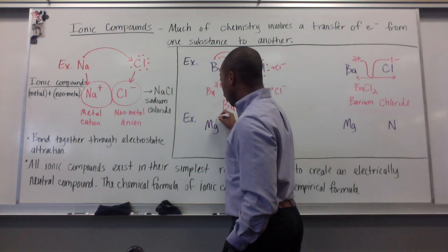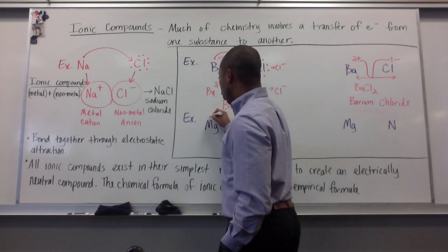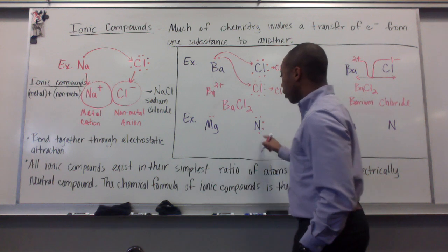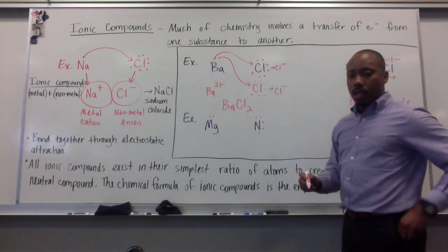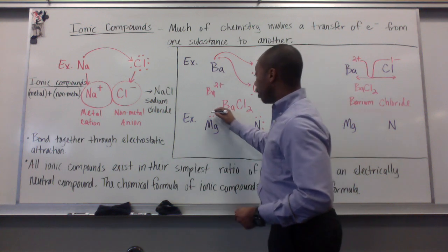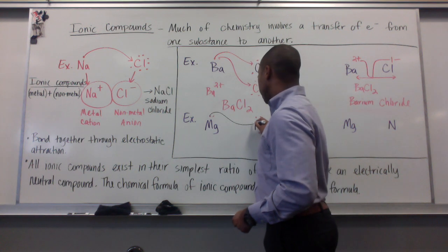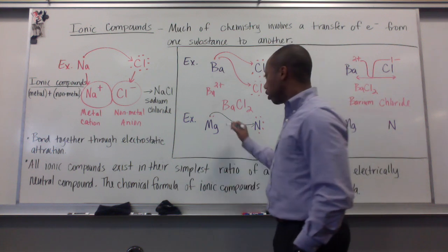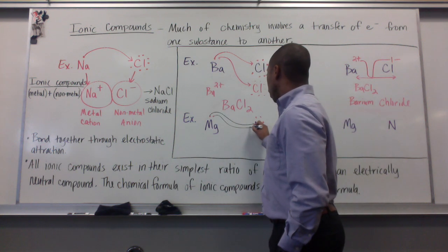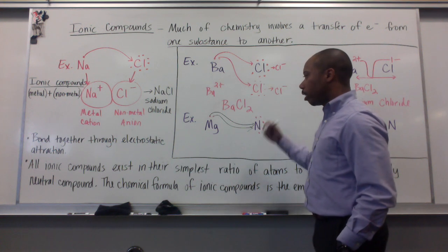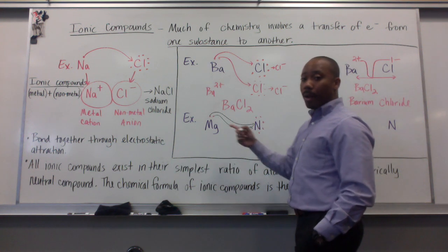Magnesium has two valence electrons. Nitrogen has one, two, three, four, five valence electrons. If I show my flow of electrons, nitrogen is going to gain the electrons as a non-metal. The metal is always going to be the one that gives. Nitrogen wants eight. It gets one, two, three, four, five, six, seven, needs one, needs another one.